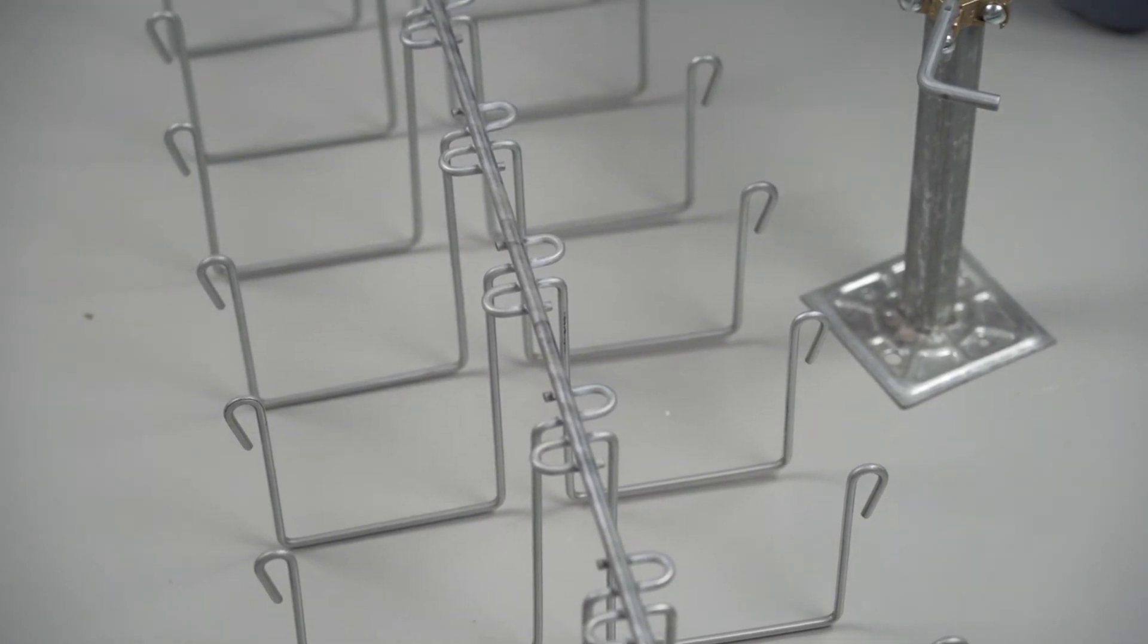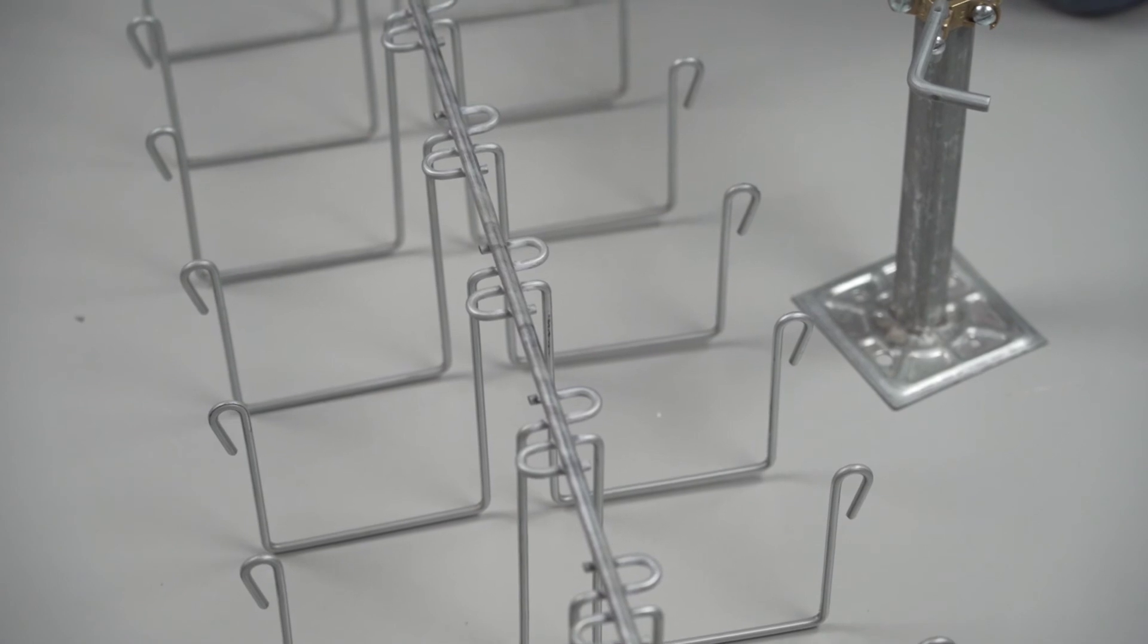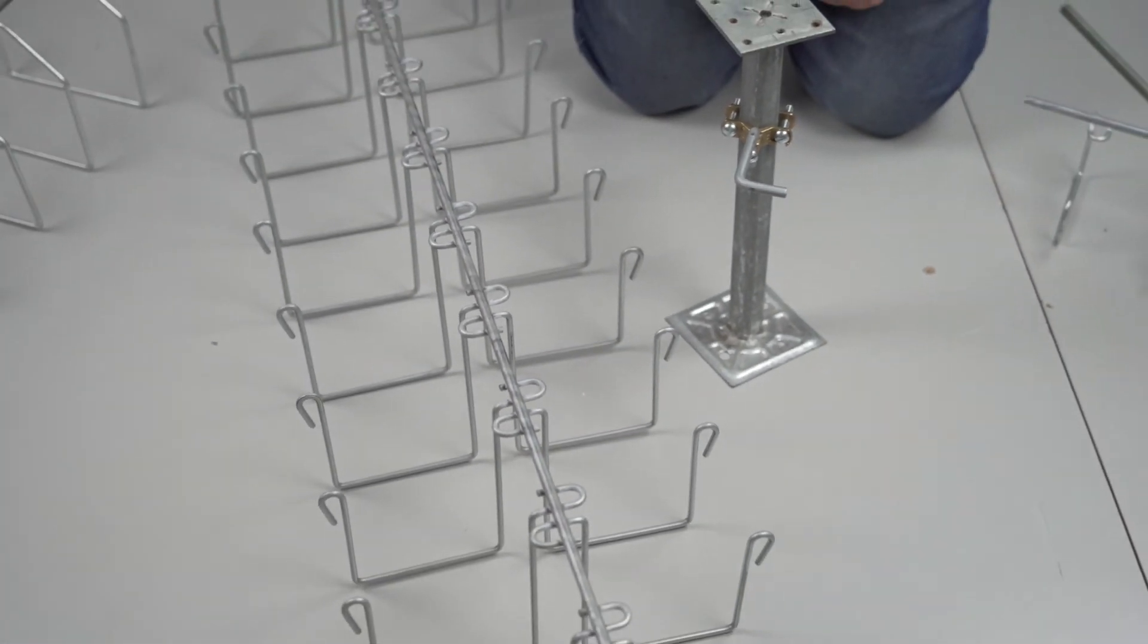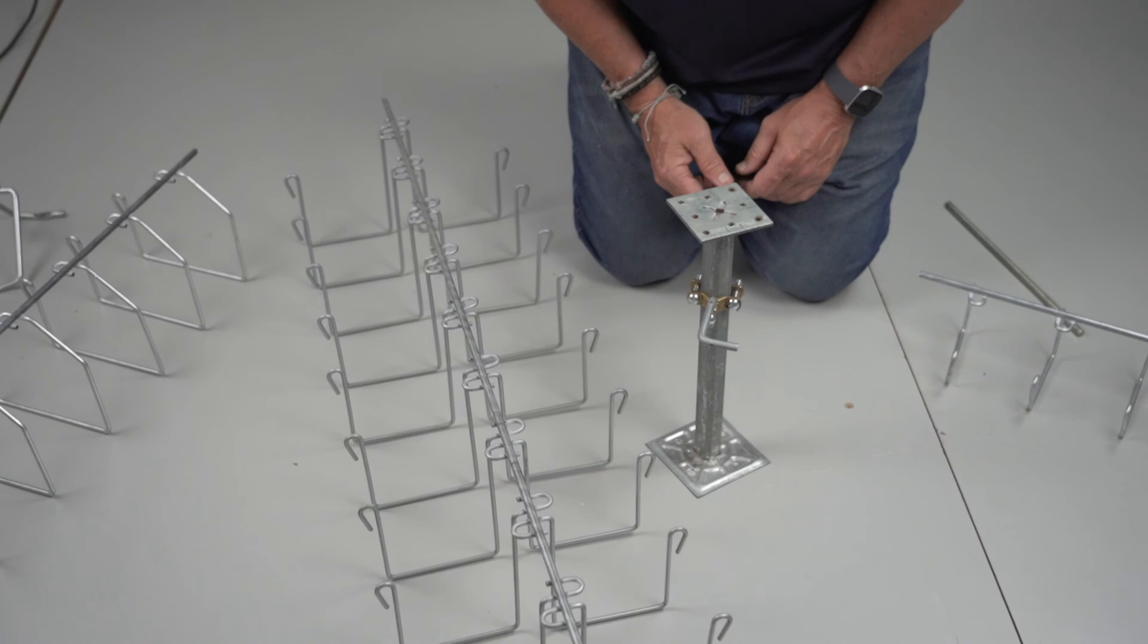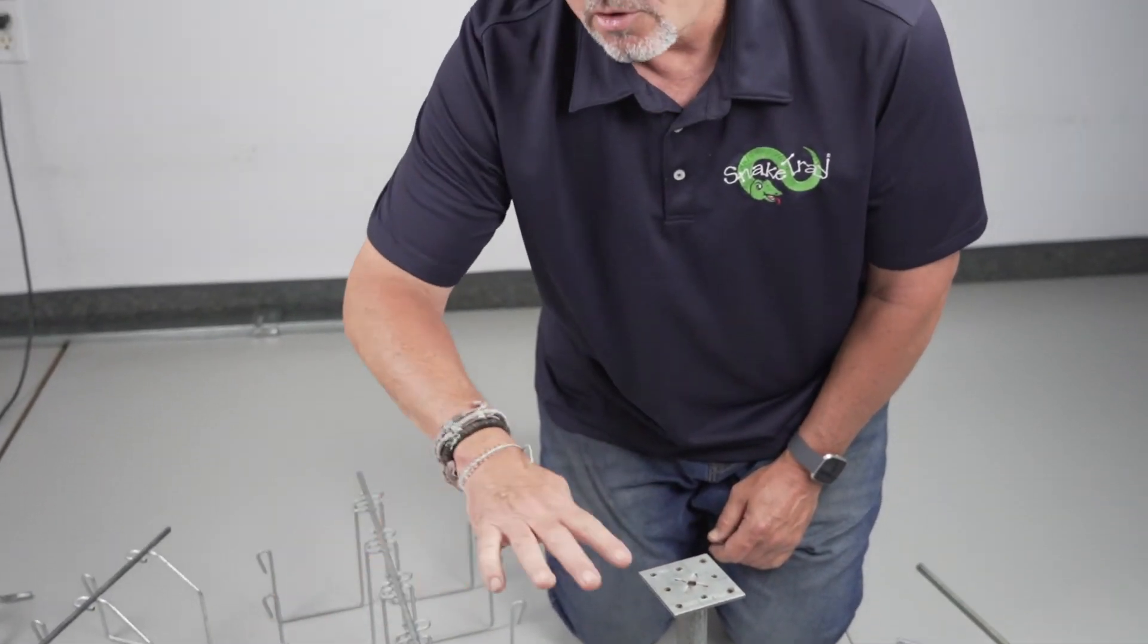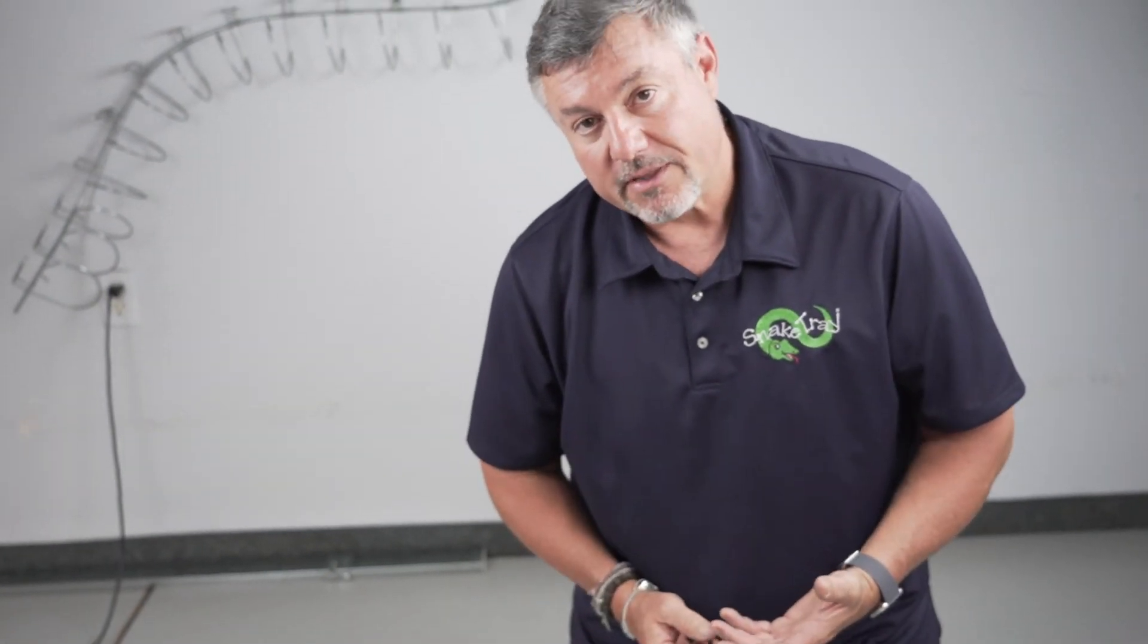So anytime that you're thinking about installing cables into a small office space or say into a renovated building construction, the 201 series trays are very good for those applications because they're hand bendable. One of the things that we've noticed is that with an older building, if we're going to renovate those buildings, there's really never been a pathway that's designed into the space. So being able to utilize a hand bendable system such as Snake Tray makes installation go much, much faster.